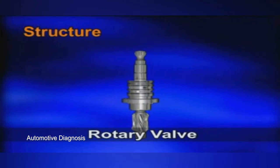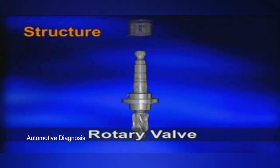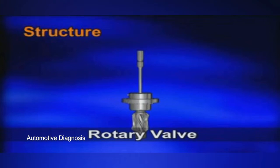Let me explain the structure and hydraulic flow of the rotary valve. It consists of 4 components. The center of the input shaft is hollow and the torsion bar is located inside. The upper part of the input shaft is fixed to the torsion bar with a pin, and the lower part is supported by a bush inside the pinion. The valve sleeve is fixed to the pinion with the dowel pin.